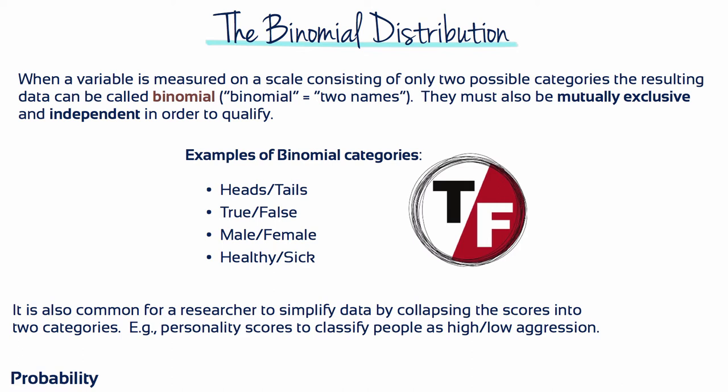Binomial data can occur when a variable naturally exists with only two categories. For example, people can be classified as male or female, and a coin toss results in either heads or tails. It's also common for a researcher to simplify data by collapsing the scores into two categories. For example, a psychologist may use personality scores to classify people as either high or low aggression.